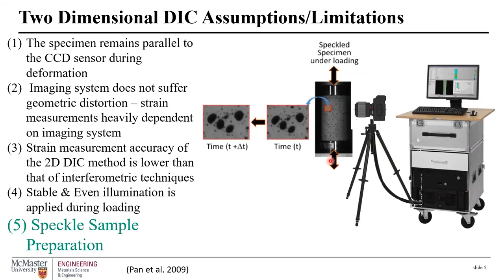Some assumptions and limitations to be cognizant of with 2D DIC: first, the specimen is assumed to remain parallel to the CCD sensor throughout deformation; second, the imaging system is assumed not to suffer dynamic geometric distortion, meaning physical points on the specimen match physical points on the image. Strain measurement accuracy using 2D DIC is lower than interferometric techniques such as fringe patterns, and stable, even illumination is assumed during loading. Speckle preparation becomes a challenge at smaller fields of view.